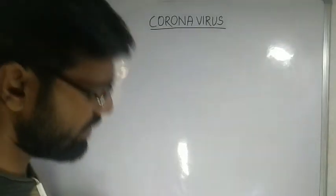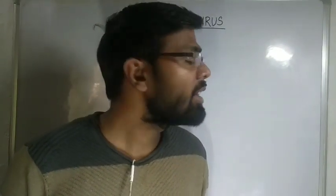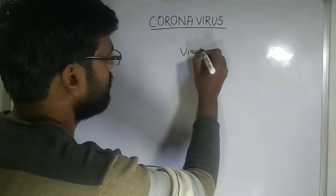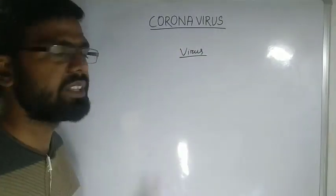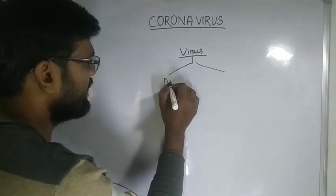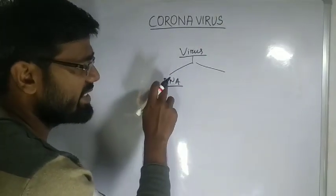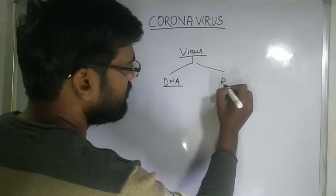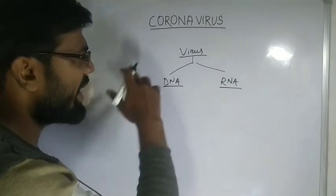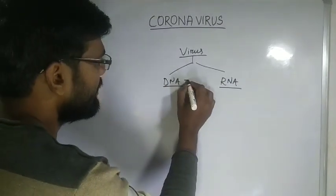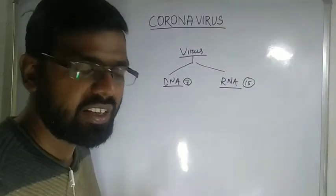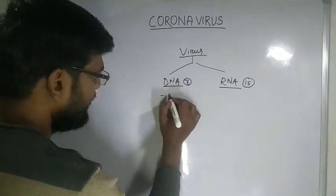Before going to the coronavirus, let's have a look at the general properties of viruses. Based on the genetic material present inside the virus, viruses are classified into two types: DNA viruses, whose genetic material is DNA, and RNA viruses. In the DNA family there are seven types, and in the RNA family there are fifteen.